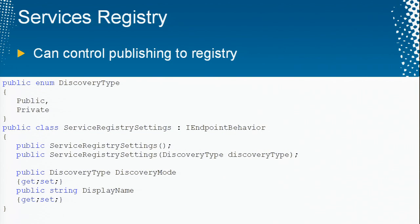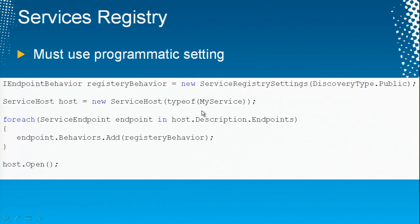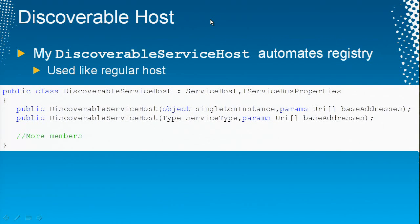You can control publishing to the registry using an endpoint behavior enum. You simply attach it to every endpoint of your services that needs to run against the service bus. The code looks like this: you instantiate an endpoint behavior, say you'd like to publish to the Atom feed, instantiate the host, manually go over every endpoint, add the behavior, then open the host. You have to do it every time before you launch a service if you want it published in the Atom feed. So let's fix it.